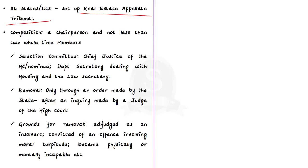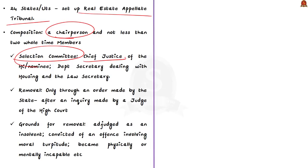Regarding the composition of the Real Estate Regulatory Authority: it shall consist of a chairperson and not less than two full-time members appointed by the respective state. Members are appointed based on the recommendation of a selection committee, which consists of the Chief Justice of the High Court or a nominee, the Secretary of the department dealing with housing, and the Law Secretary.